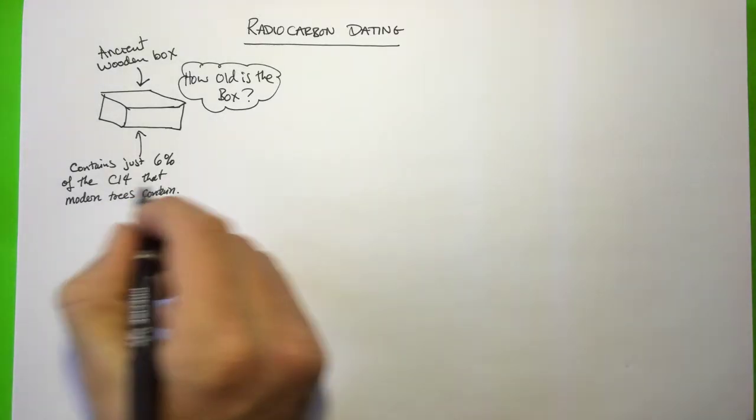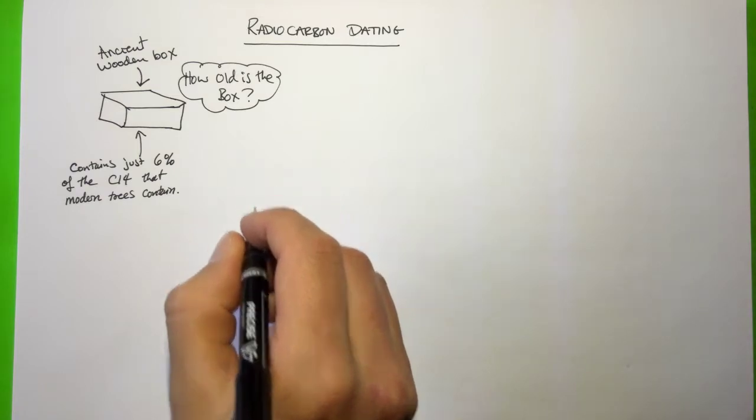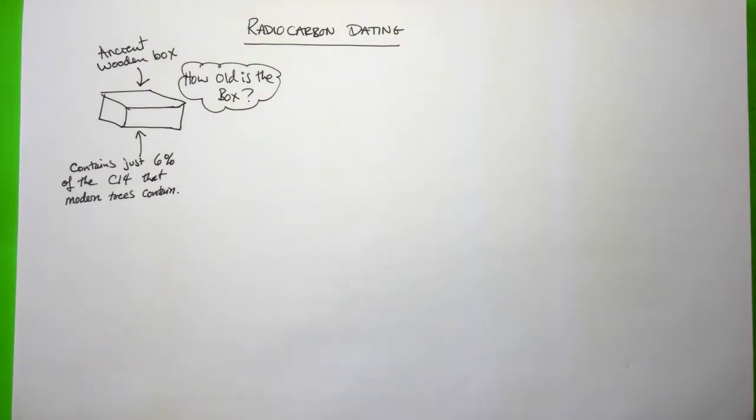The carbon-14 in modern day atmosphere is present at a level of about one part per billion. So for every billion carbon atoms that there are in our atmosphere, about one of them is a carbon-14 atom.